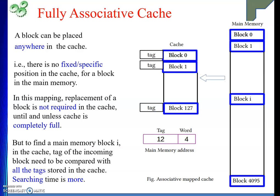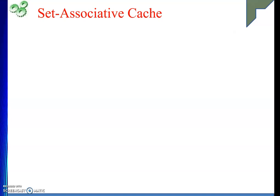Next, we have seen direct map cache where the position is fixed — the disadvantage was that though the cache was not full, we need to do replacement. Then we have seen fully associative cache where any block of main memory can occupy any position in the cache, giving us an advantage, but searching time was more. So the next method we are coming up with takes the advantage of both methods combined — that is set associative cache.